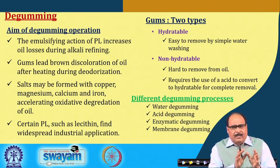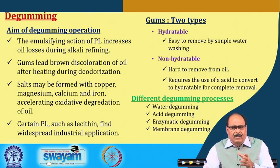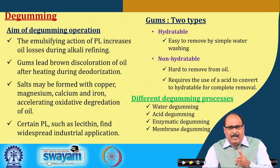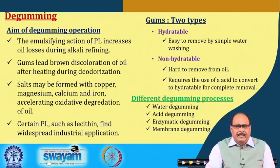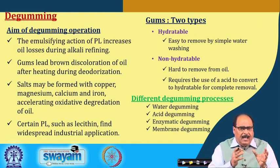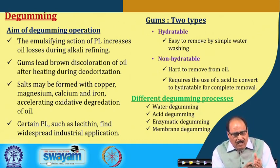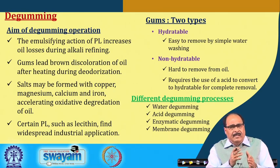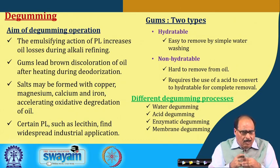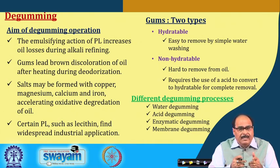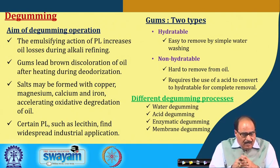In this lecture we will mainly concentrate on two major operations: degumming and neutralization. Bleaching and deodorization will be taken up in the second part. Regarding degumming — phospholipids get extracted into the oil and need to be removed. If not removed, these phospholipids, being good emulsifiers, may increase oil losses during refining. Even gums lead to brown discoloration of oil after heating during the deodorization process, and salts may form with copper, magnesium, calcium, and iron, accelerating oxidative degradation.